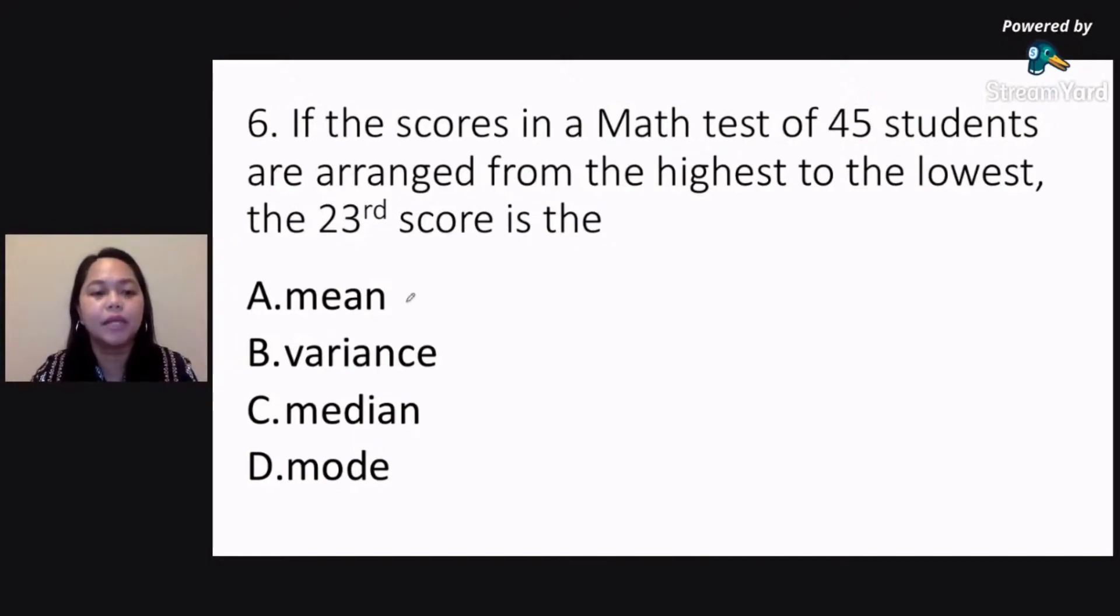Now when you say mean, or arithmetic mean, this is the average. Now you know how to get the average. What you do is you add up all the scores and you divide that by the number of scores. Now the variance, this is a measure of dispersion or measure of variability. Now the median, the median is the middlemost score. And the mode, of course, that's the most frequently appearing score.